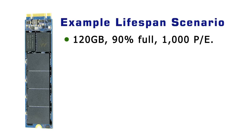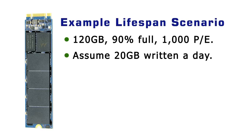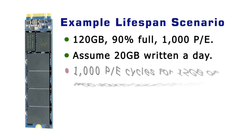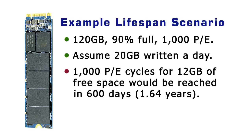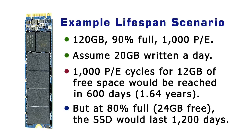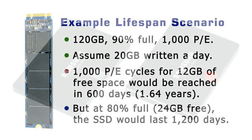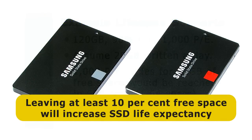Imagine, for example, a 120GB SSD which is 90% full and has a rating of 1,000 PE cycles. Manufacturers typically work on the assumption of end users writing up to 20GB of data in a day. So if this quantity of data was written and erased from the 12GB of free space every 24 hours, its cells would hit 1,000 PE cycles in just 600 days. But if the drive were only 80% full, it would last for 1,200 days, and so on. A key takeaway here is that it's good practice to leave adequate free space on an SSD to preserve its life expectancy.